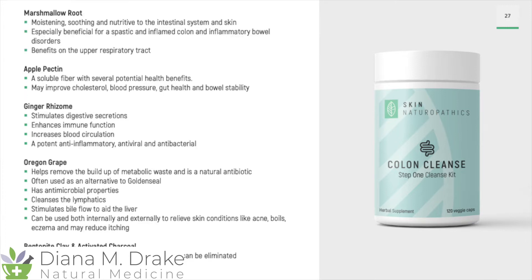We also have marshmallow root, which is moistening, soothing, and nutritive to the intestinal system and the skin. It's especially beneficial for a spastic and inflamed colon and inflammatory bowel disorders, and also very beneficial for the upper respiratory tract. We have apple pectin, a soluble fiber with potential health benefits that may improve cholesterol, blood pressure, and help with gut health and bowel stability. Ginger rhizome stimulates digestive secretions, enhances immune function, increases blood circulation, and is a potent anti-inflammatory, antiviral, and antibacterial — so if we do have some pathogenic activity, this will help with that.